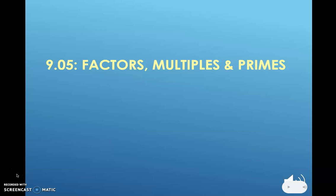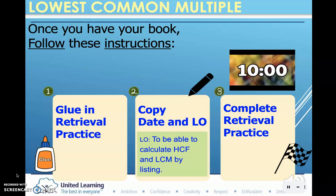Hello class, today we are starting a new topic on factors, multiples and primes. We will start with the lowest common multiple, which is your title at the top. Your learning objective is in the green box: to be able to calculate highest common factors and lowest common multiples by listing.